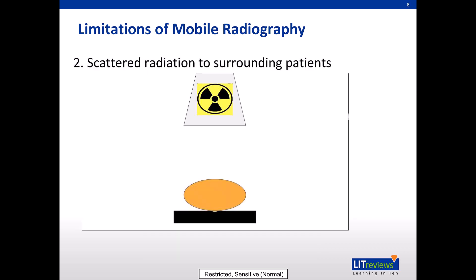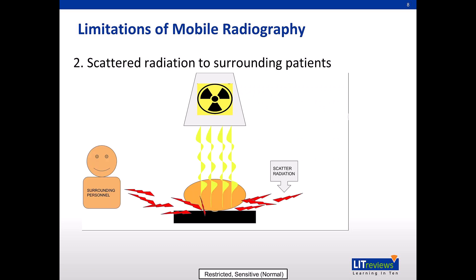Secondly, there is risk of scattered radiation to surrounding patients. Scattered radiation is secondary radiation that spreads in different directions from a beam when that beam interacts with any matter, such as body tissue. Therefore, surrounding patients may be exposed to unnecessary radiation through bedside radiography.